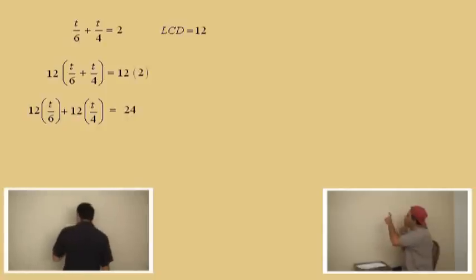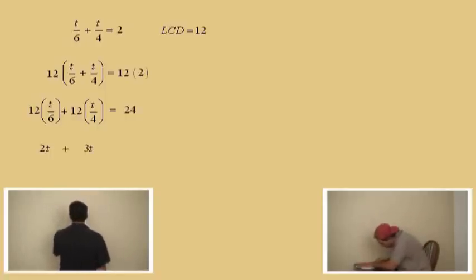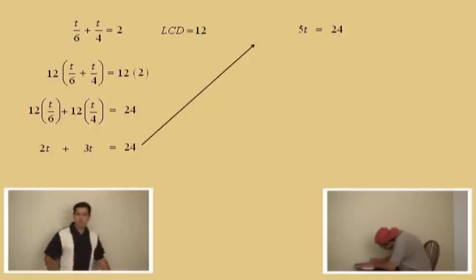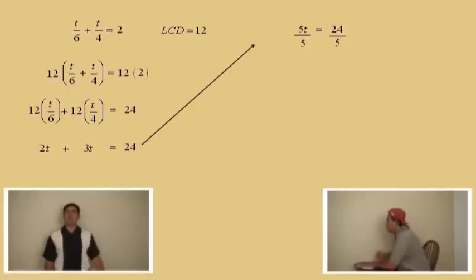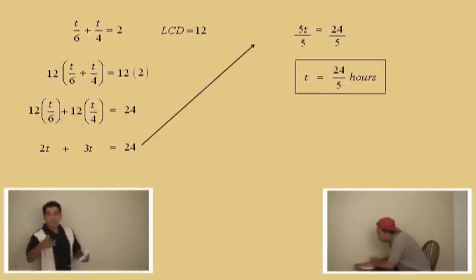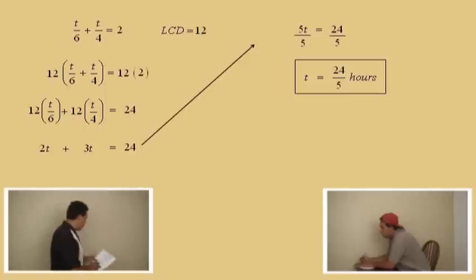If you're having problems, you can go back to the pre-algebra videos on clearing fractions. Twelve times T over six is 2T, because six goes into twelve two times. Twelve times T over four is 3T, because four goes into twelve three times. The right-hand side is 24. So 2T plus 3T gives you 5T equals 24 — it's like two apples plus three apples gives you five apples. To solve for T, divide both sides by five. T equals 24 over 5 hours. That's how long it takes both Charlie and Brandy working together. Don't forget to circle your answer.